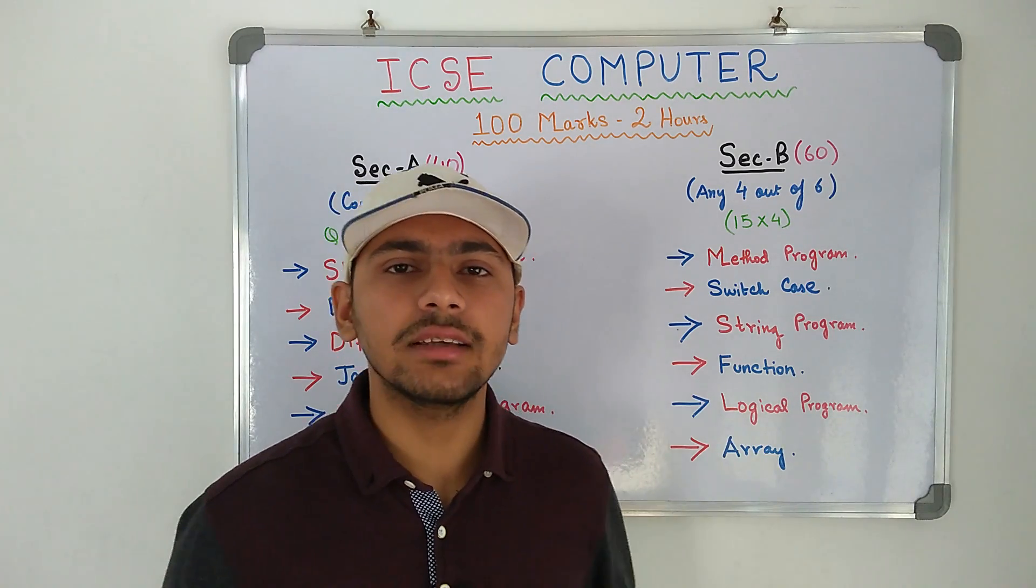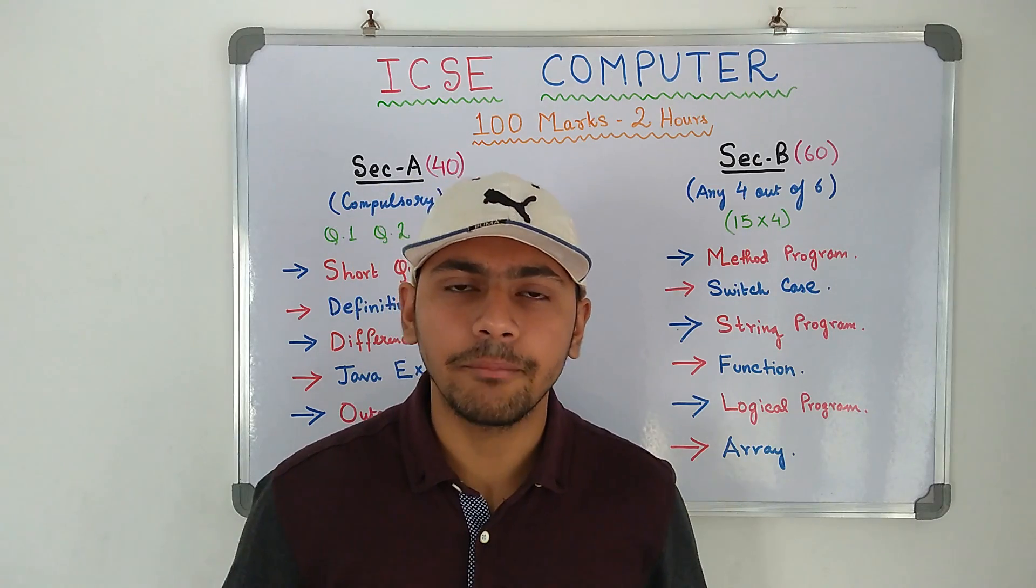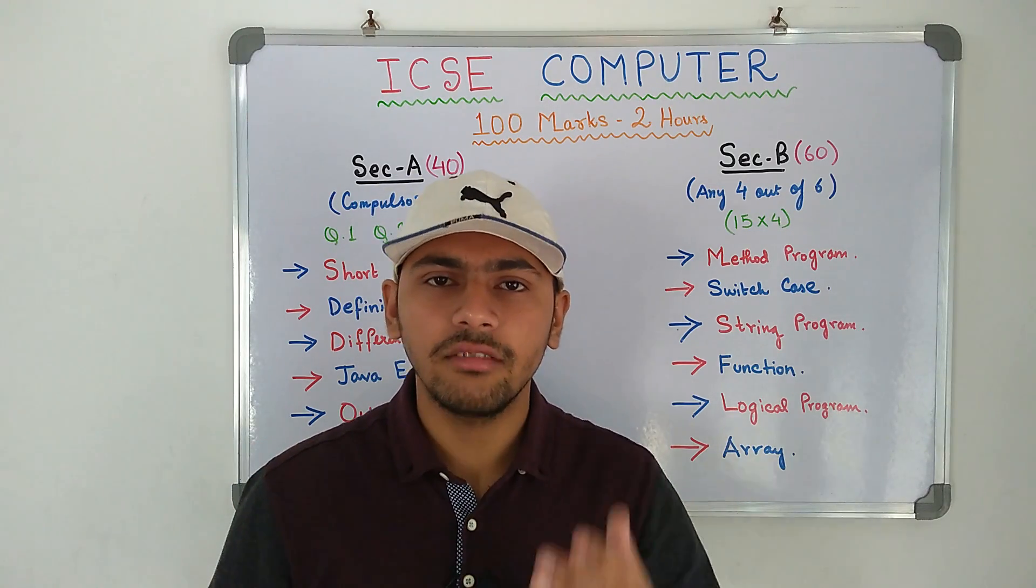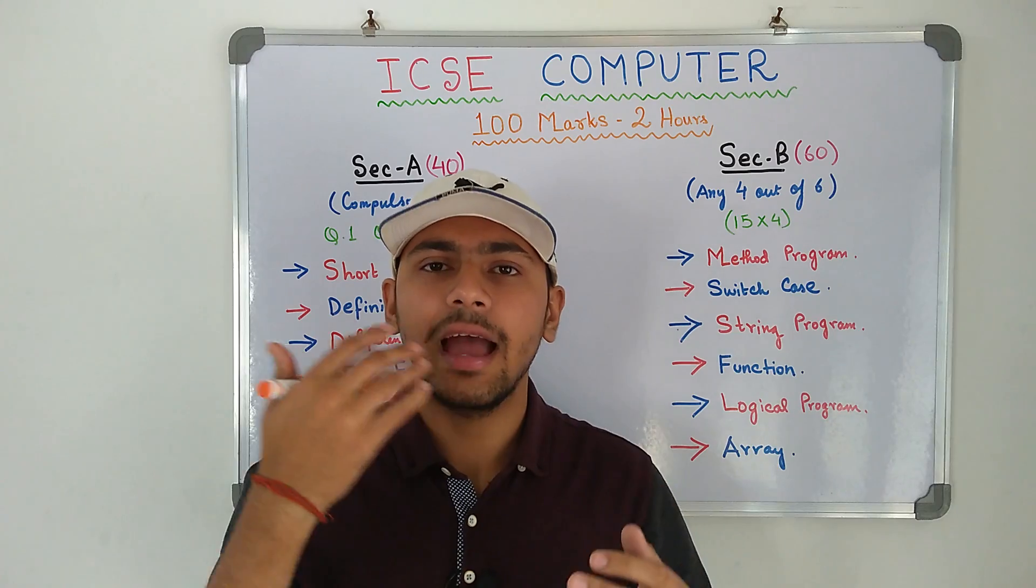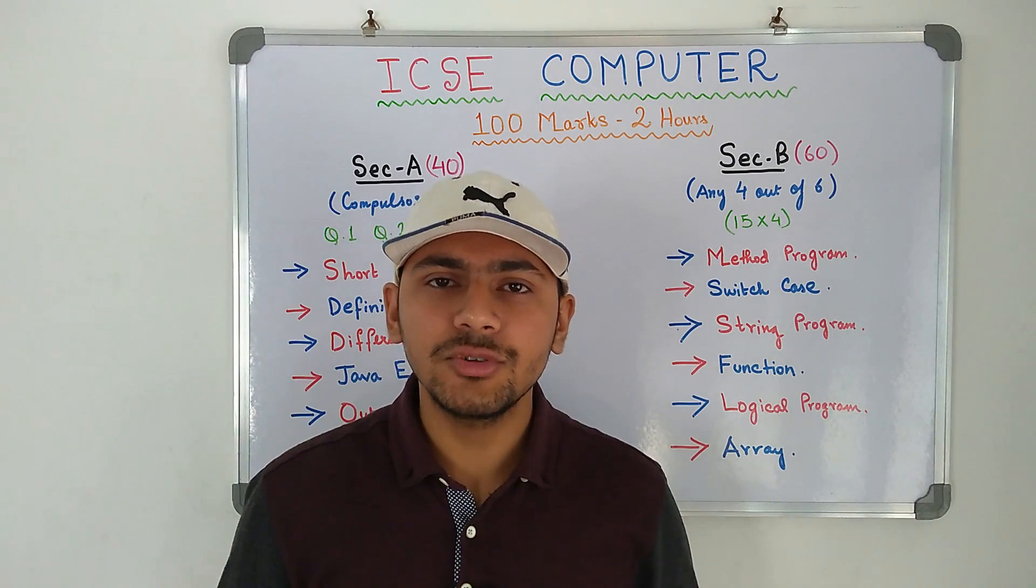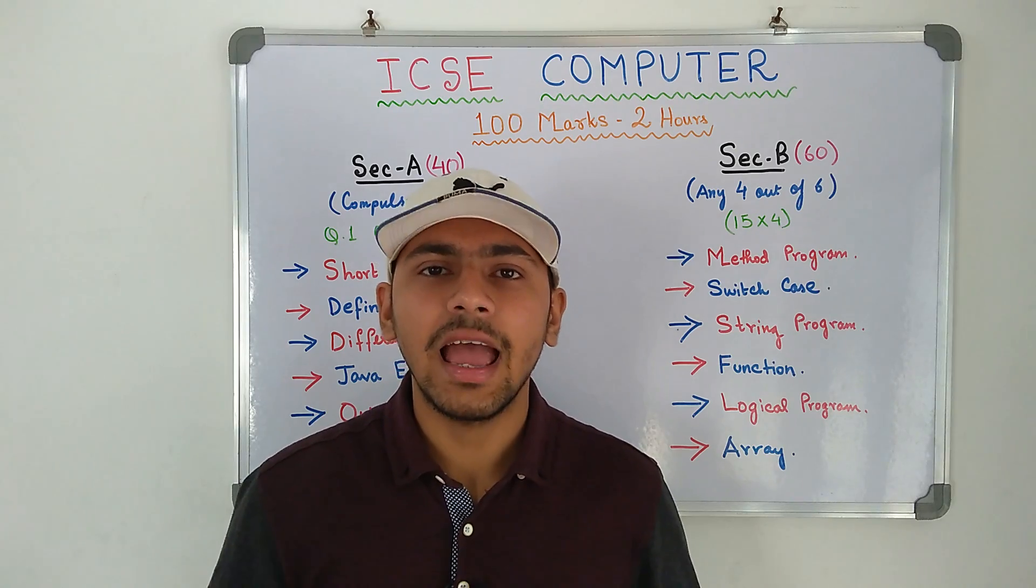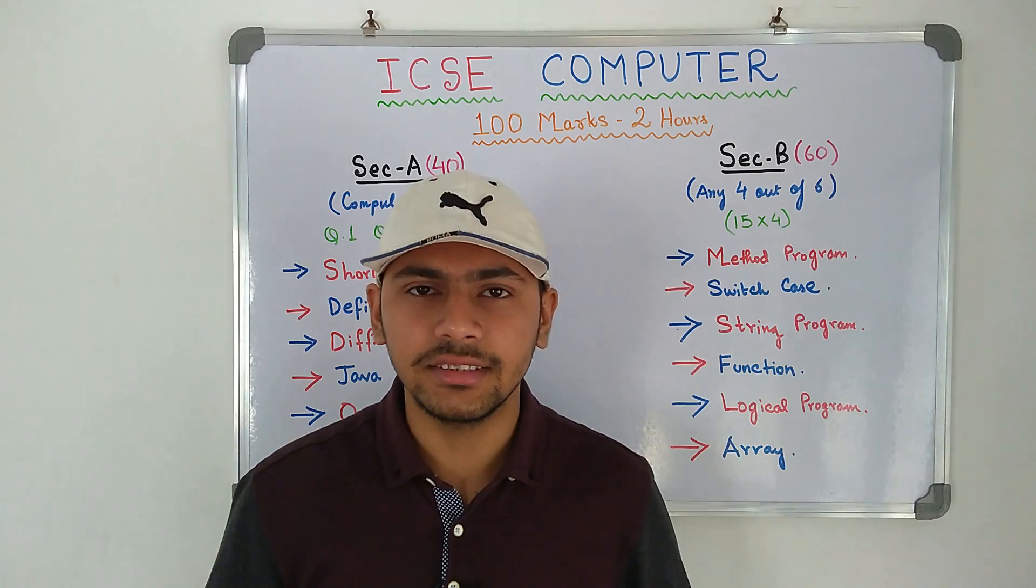And number three, variable description is a must while you are writing the program. That means you have to make a table - variable type, variable name and variable description in which you state the variables that you have used and why you have used them. It is pretty easy.